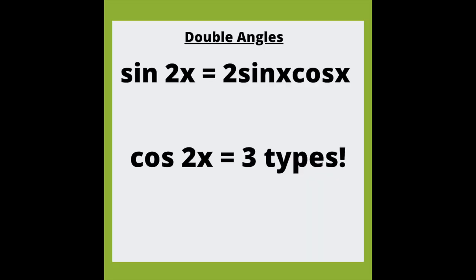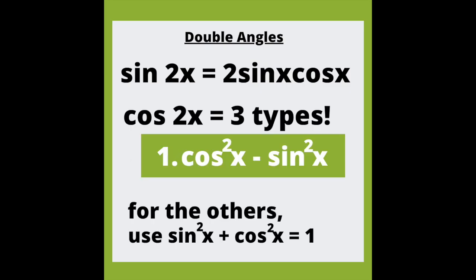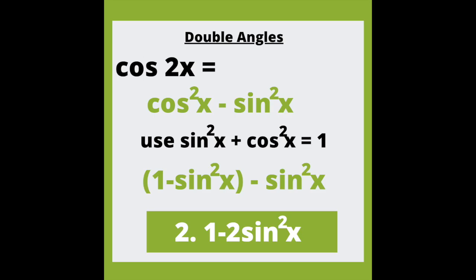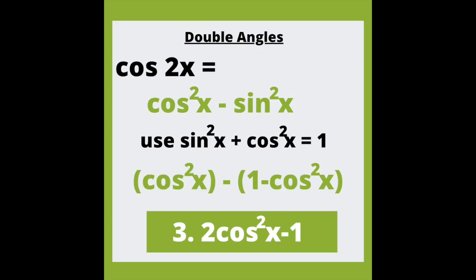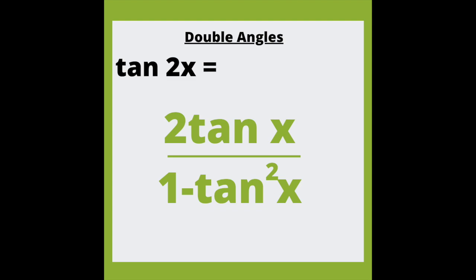The double angle of sine is 2 sine times cosine. The double angle of cosine has three different types: cosine squared X minus sine squared X is way number 1, but use the main identity to derive the others. Replace cosine squared X with 1 minus sine squared X and you get 1 minus 2 sine squared X. Or replace sine squared X with 1 minus cosine squared X and you get 2 cosine squared X minus 1. The double angle of tan is a complex fraction: 2 tan X over 1 minus tan squared X.